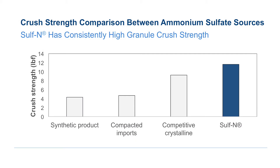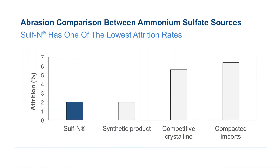Hardness determines the handling and broadcasting capabilities of a fertilizer. One way to determine hardness is by measuring crush strength. Crush strength is the pressure fertilizer particles can withstand before fracturing. The higher the crush strength, the less likely the particles are to fracture.